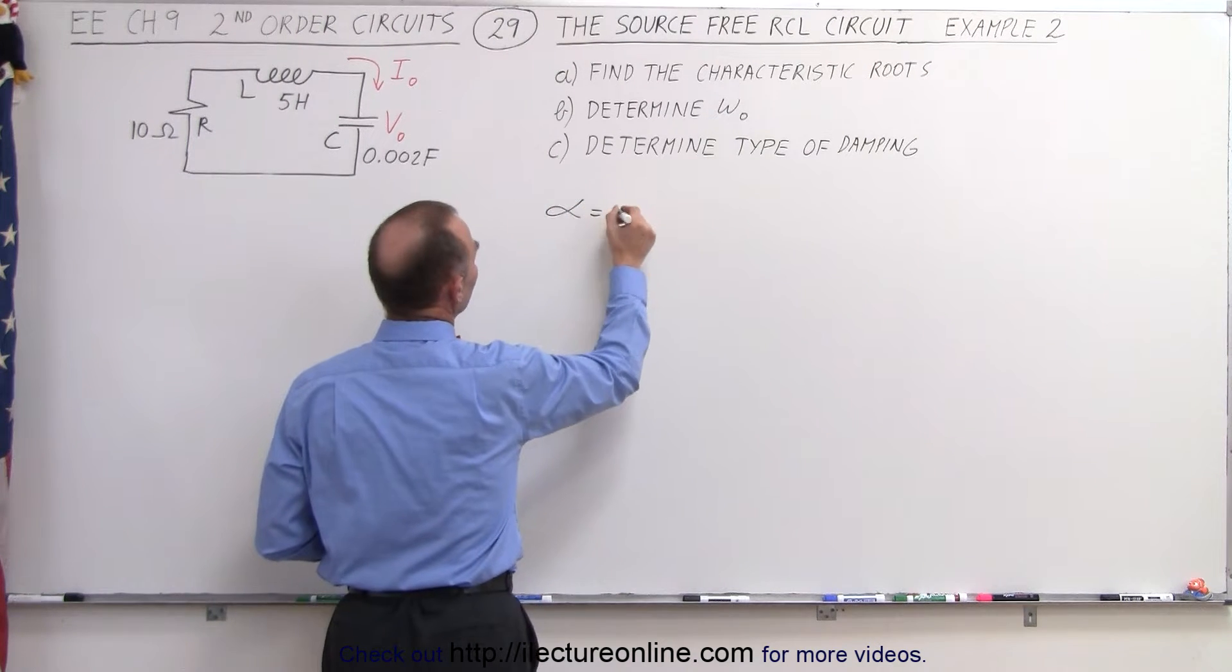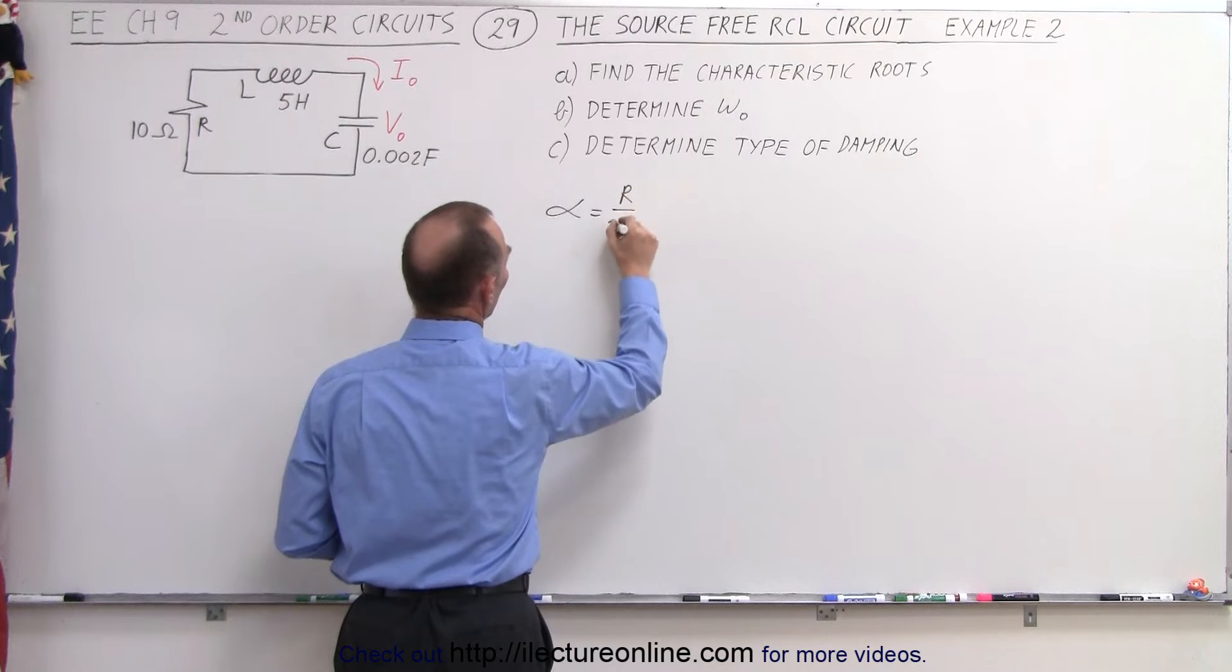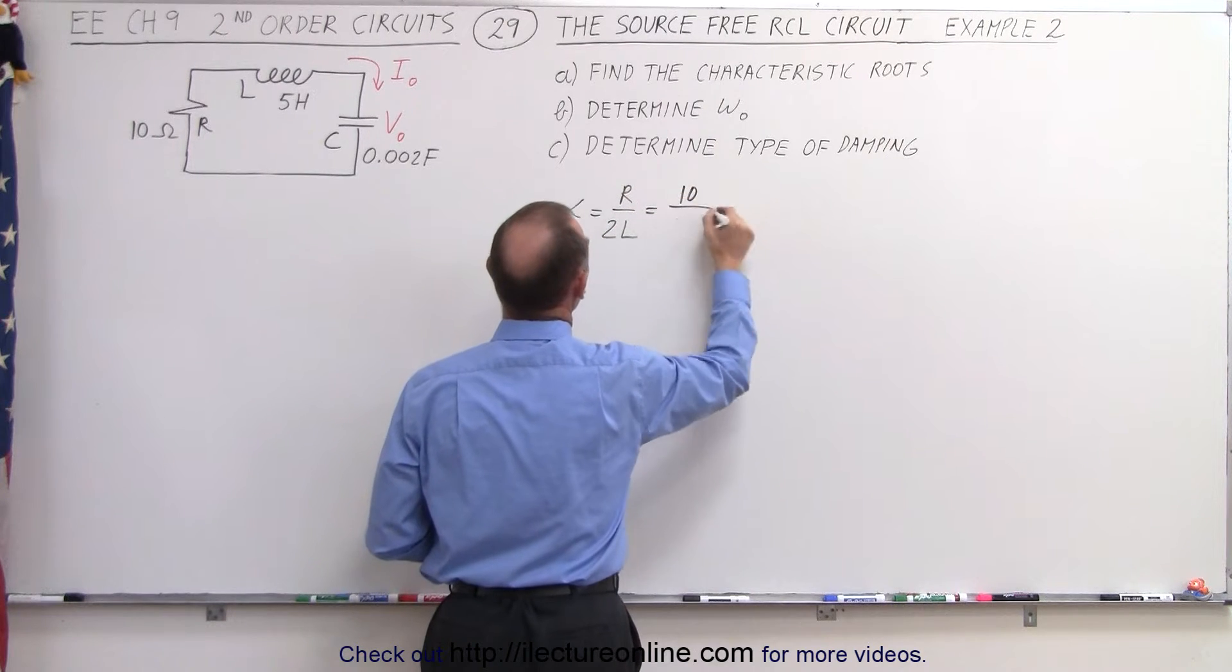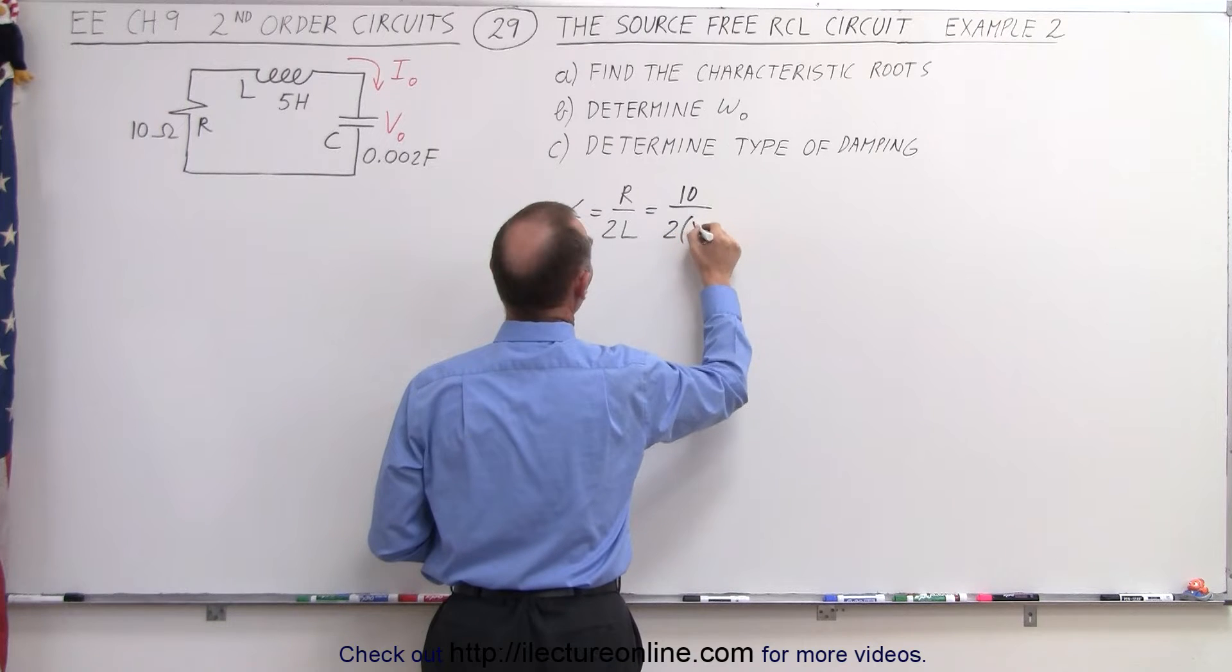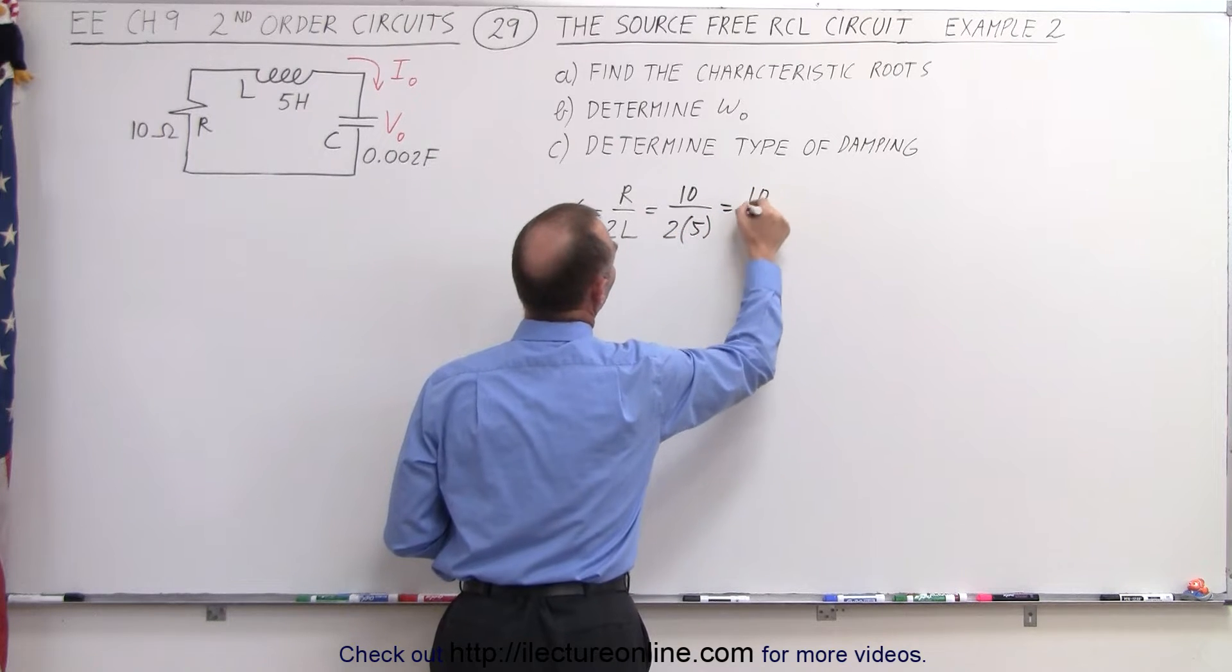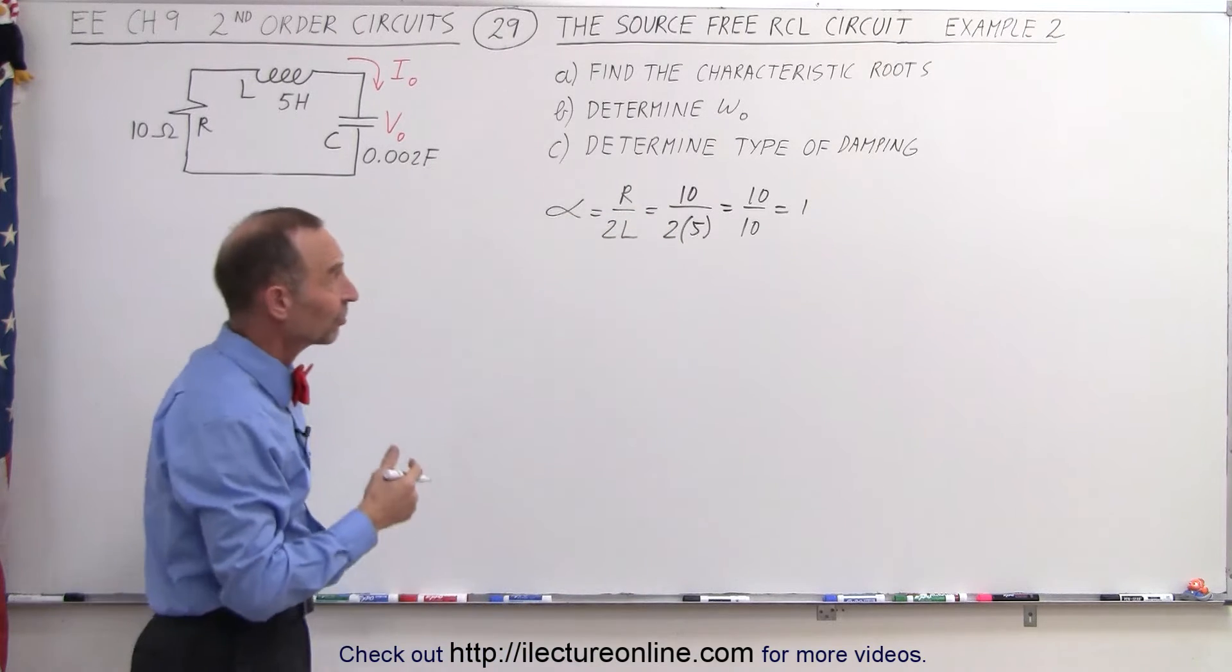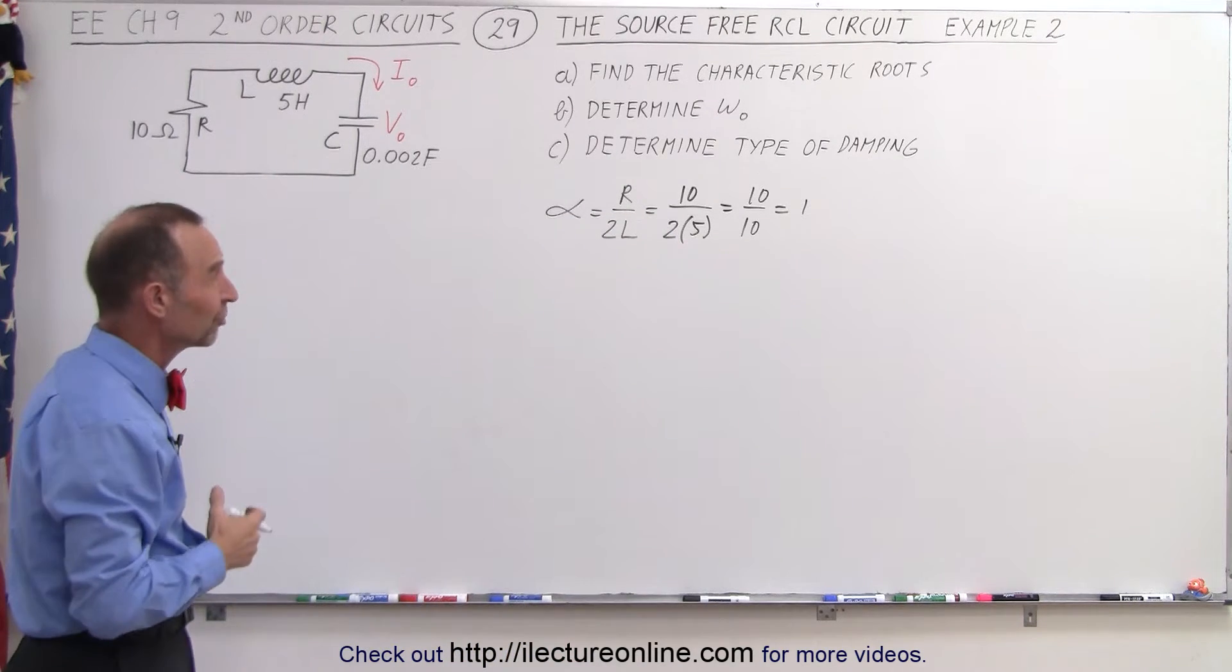So the damping factor, by definition, is equal to the resistance divided by twice the inductance. So in this case, that's equal to 10 divided by 2 times 5, which is 10 over 10, which is equal to 1. This is a relatively small damping factor, so I'm suspecting it might be underdamping.